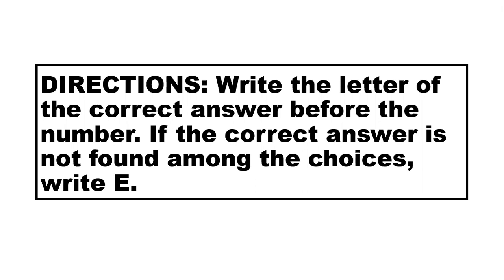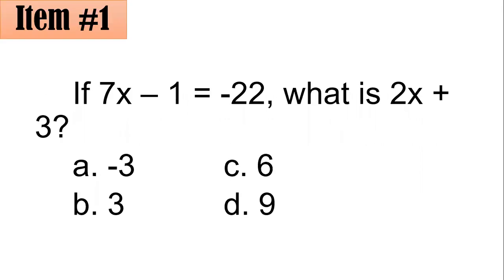Let's start with item number one. If 7x minus 21 minus 1 equals negative 22, what is 2x plus 3? Is it negative 3, 3, 6, or 9?